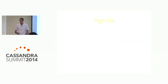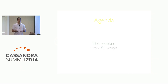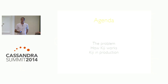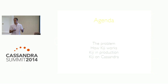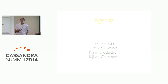I'll step through the agenda for today. I'm going to begin by describing the problem we were trying to solve when we built Kiji — that is, what it means to build a big data application and why it can be difficult. Next, I'll talk about how Kiji works. Third, I'll discuss real-life production use cases. And finally, I'll talk about how we added support for Cassandra, our data model, and pitfalls we encountered. We originally developed Kiji on top of HBase and added Cassandra support this year.